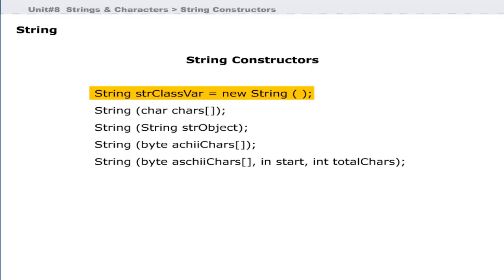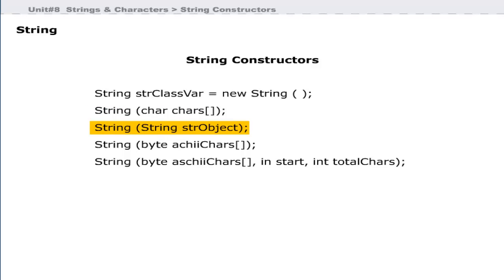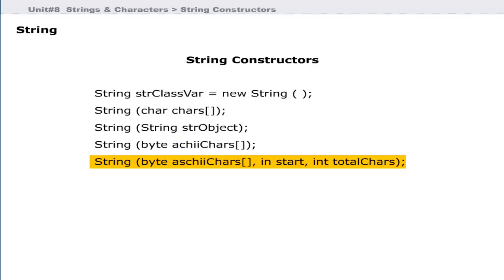The default constructor creates an empty string. The constructor that takes an array of characters as a parameter creates a string, and its return type is String. Another constructor takes a String object as a parameter and returns a String. Another constructor takes a byte array of ASCII characters as a parameter and returns a String object containing those characters. There is also a constructor that uses an array of ASCII characters and creates a string from a given index position to a given total character count.